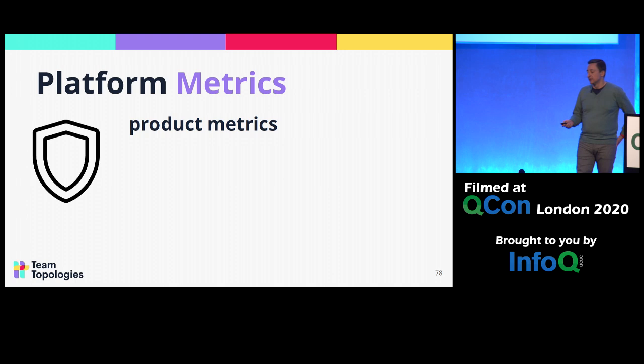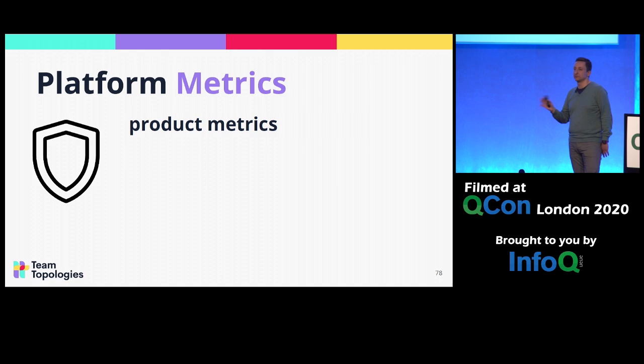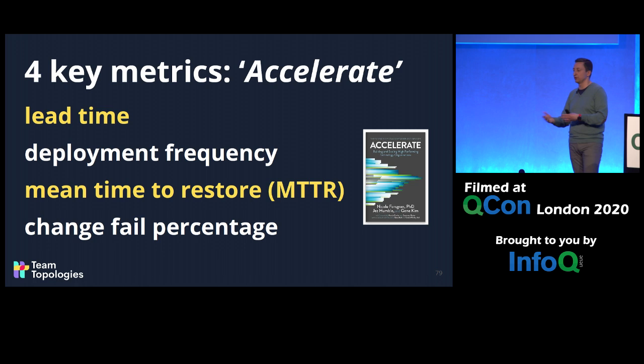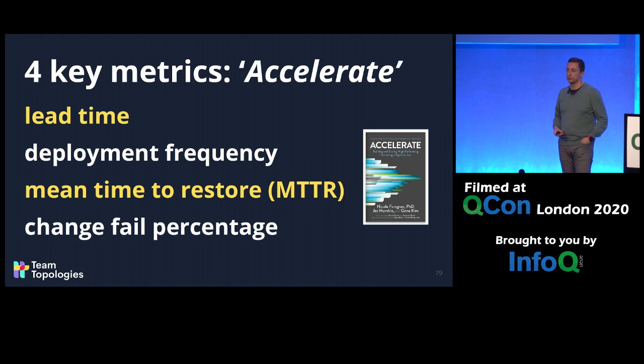Having some kind of metrics can be quite useful. For platform metrics, I want to highlight four different categories. The platform is a product itself, so we can look at product metrics — for example, from the book Accelerate by Dr. Nicole Forsgren, Jez Humble, and Gene Kim, which talks about four key metrics closely related to high-performing teams: lead time, deployment frequency, MTTR, and so on. We can look at these to help guide our own platform service delivery and operations.